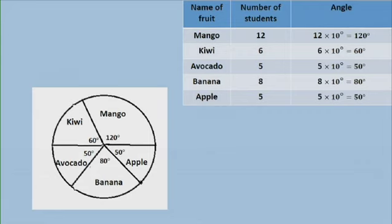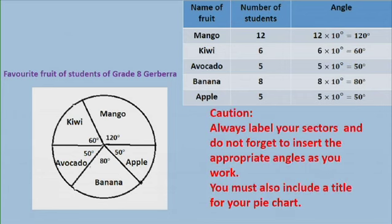This is my pie chart, but it is not complete. You need to give a title to your pie chart. The title here is 'Favorite Fruit of Students of Grade 8 Gerbera.' A caution for you: always label your sectors and insert the appropriate angles as you work. Do not wait until you have measured all the different sectors and then start labeling — you might forget which sector corresponds to which angle. You must also include a title for your pie chart.